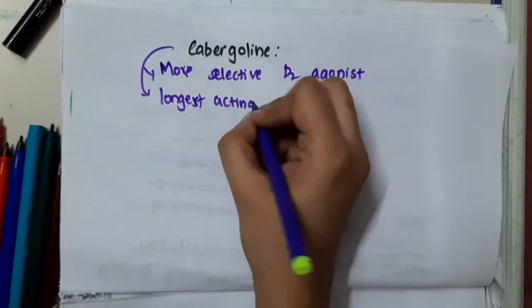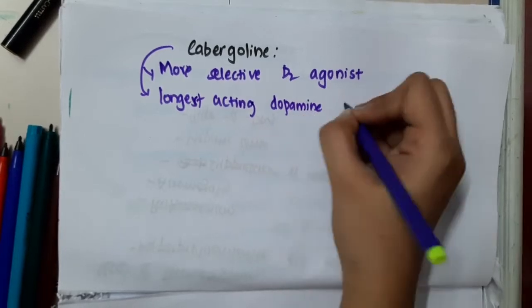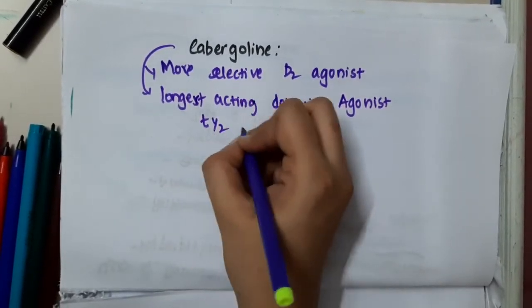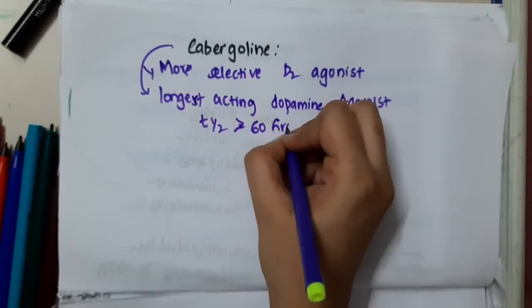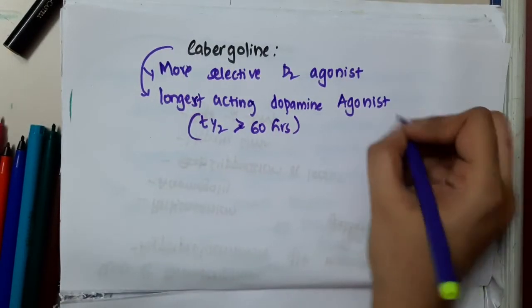Actually, it is the longest acting dopamine agonist. How is it the longest acting? The half-life of cabergolin is more than 60 hours.